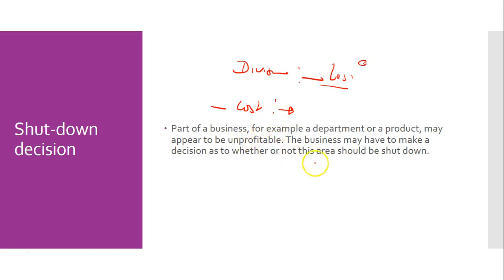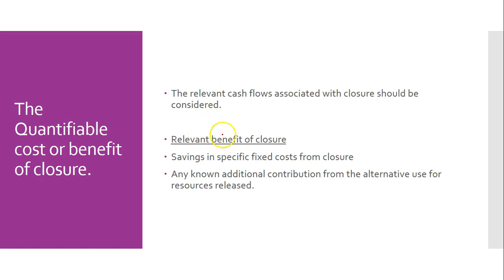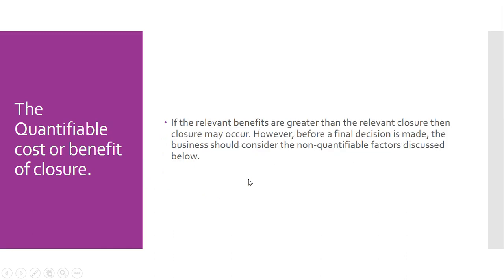If the division is truly making a loss, then the business might think about shutting it down. The question is: what are the relevant costs associated with closing? If you close the business, you lose the contribution from that area. There may be penalties, compensation costs, reorganization costs, redundancies, but also benefits — savings on fixed costs and additional contributions from alternative use of those resources.